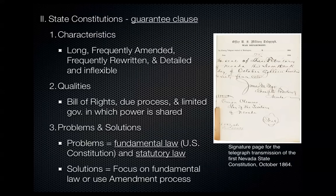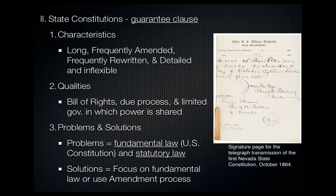Now, state constitutions, compared to the United States Constitution, are much, much longer. The U.S. has a tradition of limited government, and Article 4, Section 4 of the Constitution — called the Guarantee Clause — guarantees every state admitted to the union a Republican form of government, understood to mean a limited and representative form of government. The constitution provides the guidelines for how state and local governments will provide limited and representative government, though each state constitution outlines a specific framework for its state.